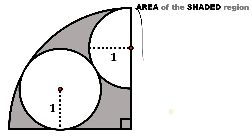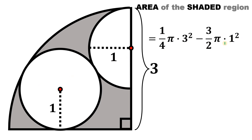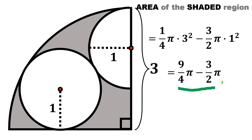Going back to the quarter circle, we know its radius equals three units. To get the area of the shaded region, we take the area of the quarter circle minus one and a half times the area of the small circle with radius one. So: (1/4)π(3²) − (3/2)π(1²) = 9π/4 − 3π/2 = 3π/4.